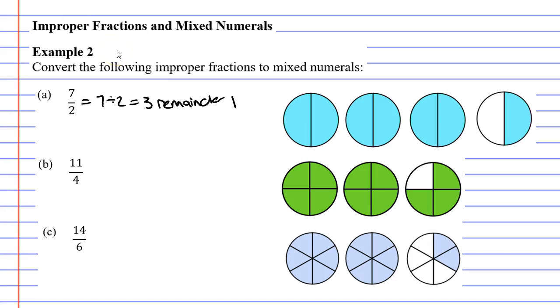And the remainder is what your numerator will be. So let's do that now. 3 remainder 1 converts to 3 with a numerator of 1. Remembering that our denominator stays the same. We had a denominator of 2. So our mixed numeral will also have a denominator of 2. We get 3 and a half. This will be our solution.